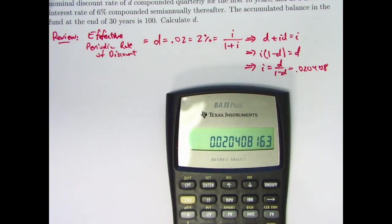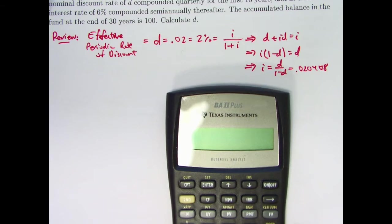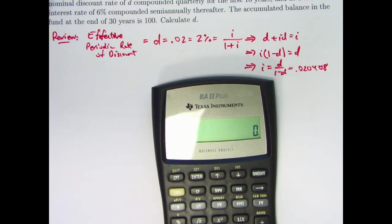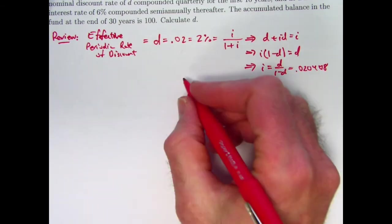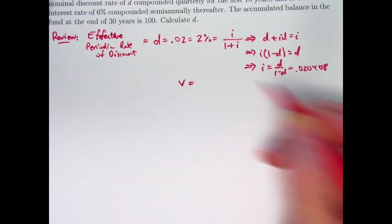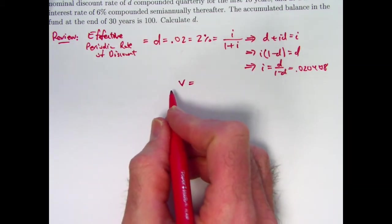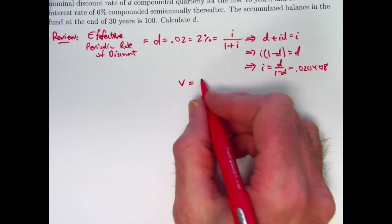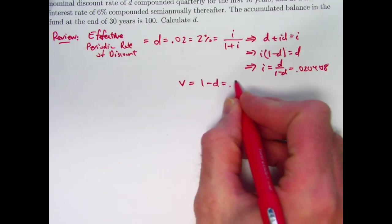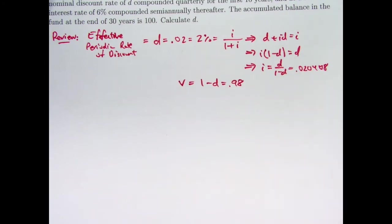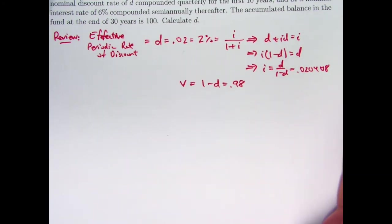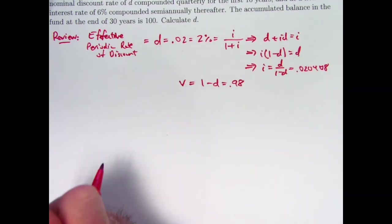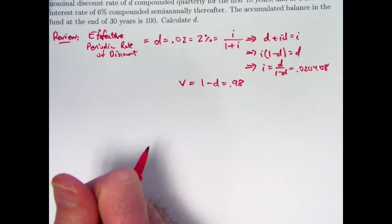1 minus D is something you should be familiar with as well. 1 minus 0.02 is 0.98. That is the value of V, the effective periodic discount factor. Not discount rate, but discount factor. 1 minus D, which is 0.98, 98%. This is the thing you multiply an amount by to get the value of that amount in the preceding year if it's an annual rate.